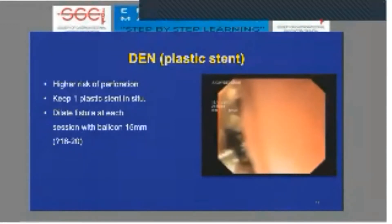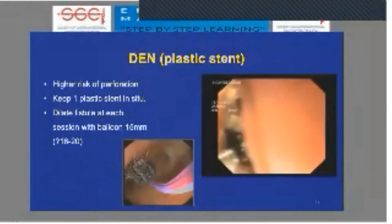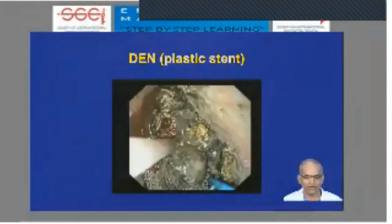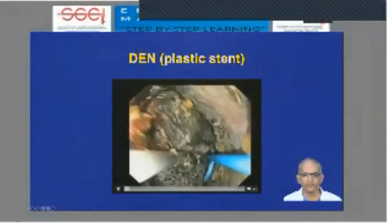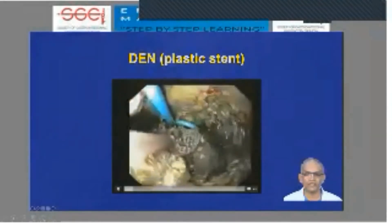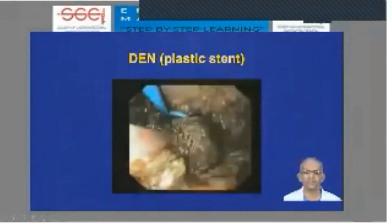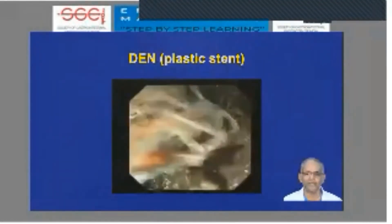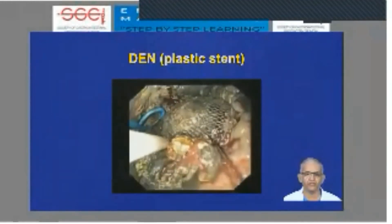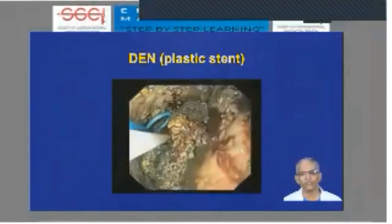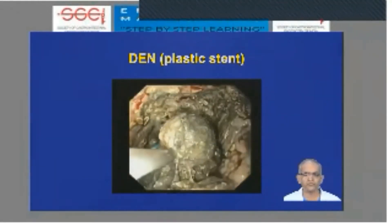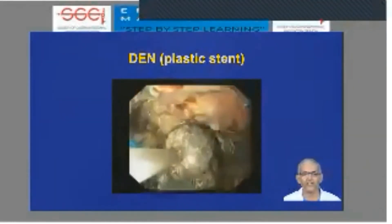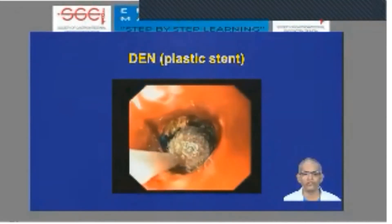Some people prefer dilation to 18 to 20 millimeters, but my personal preference is 15 millimeters. The devices that can be used while doing DEN with a plastic stent in situ include a Roth Net or whichever accessory you are familiar with. It all depends on how the debris is placed — whether it's loose or adherent, whether it's next to a blood vessel — all these things make a huge difference in deciding which device to choose.